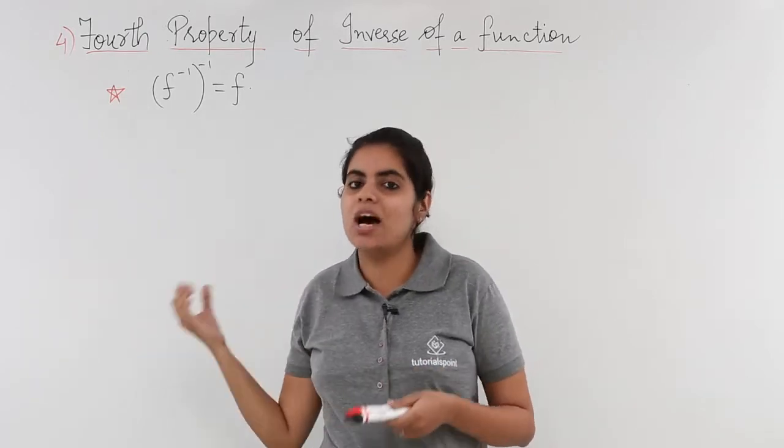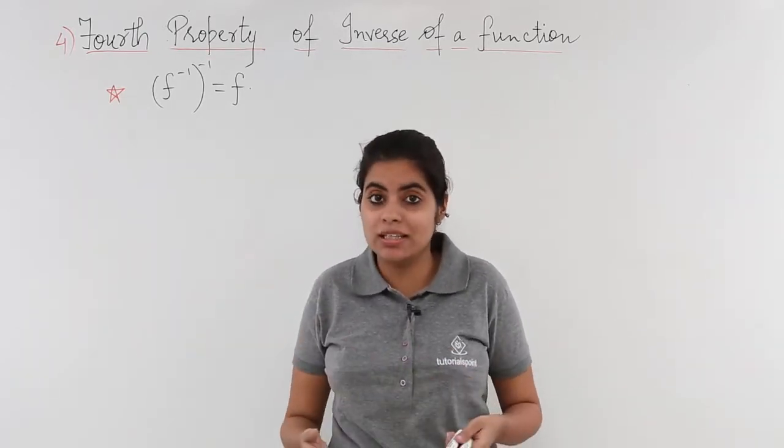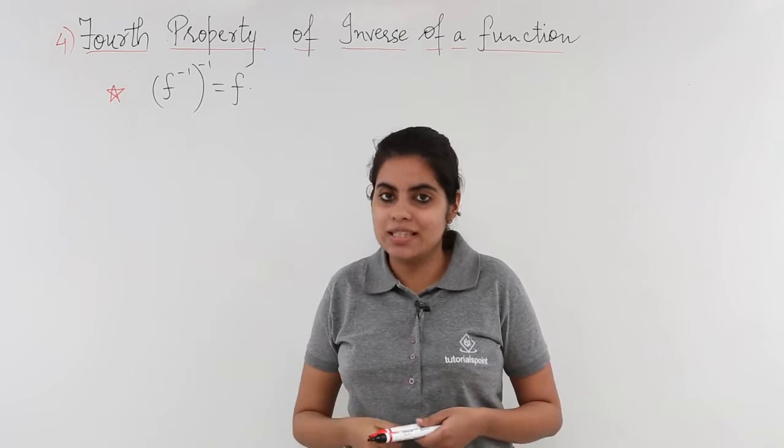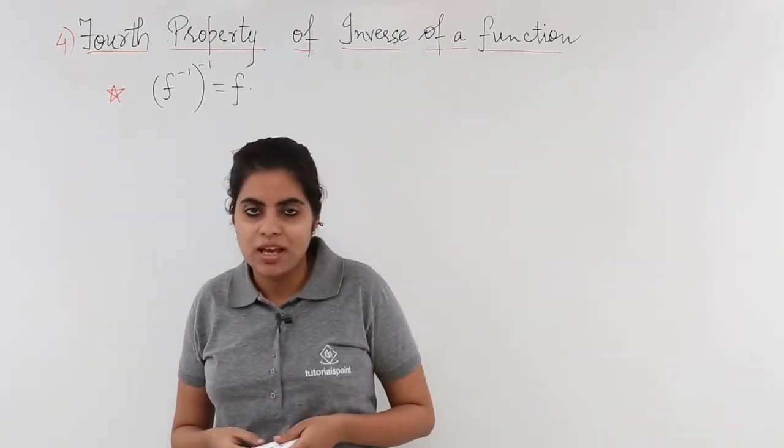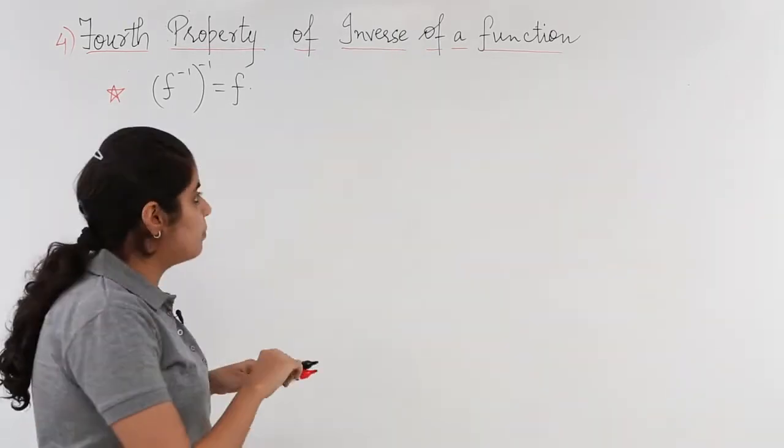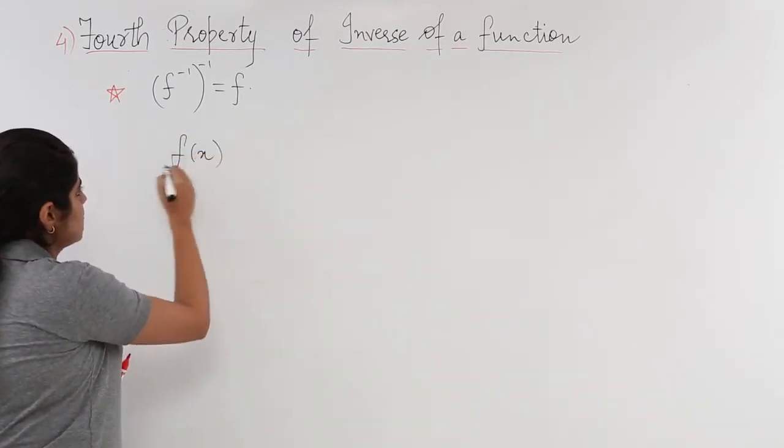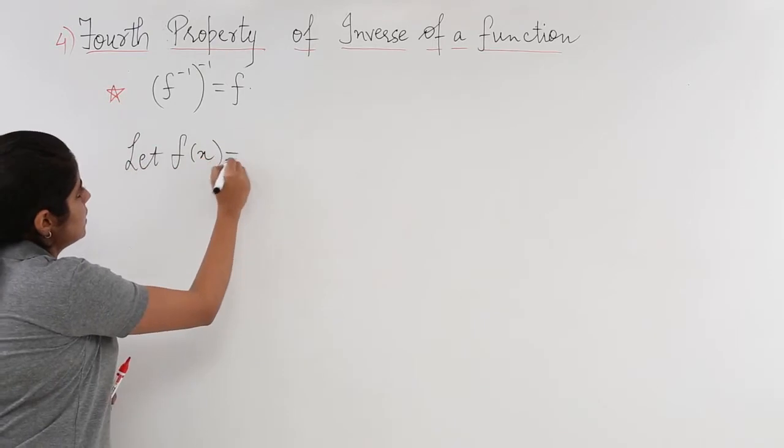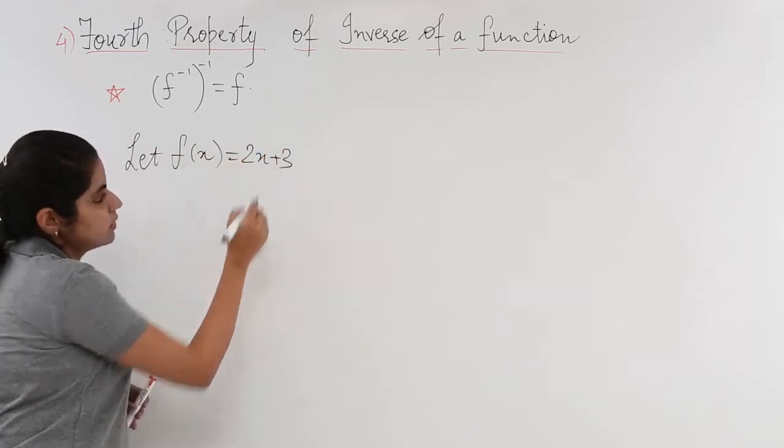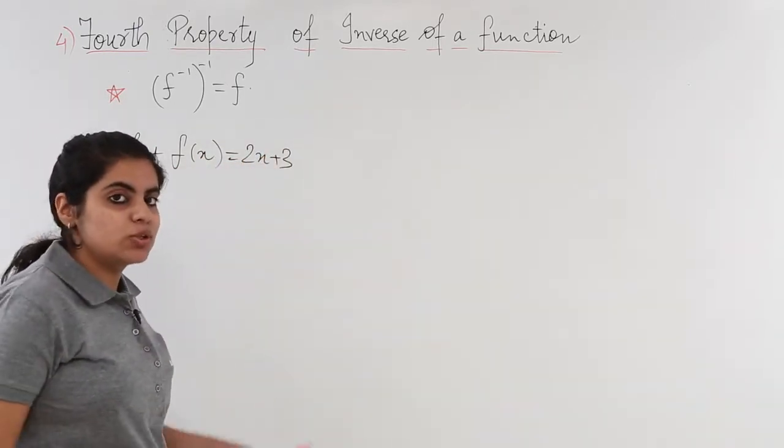How do we understand this with the help of an example? Let's see that now. Suppose I have a very simple bijective function. The function that I take is f(x) = 2x + 3.